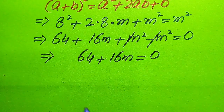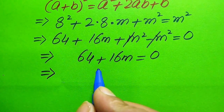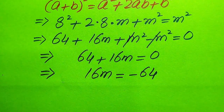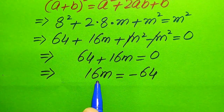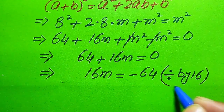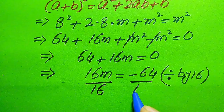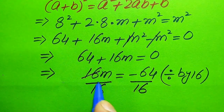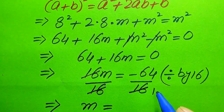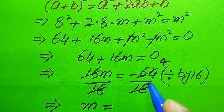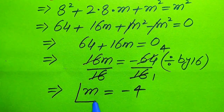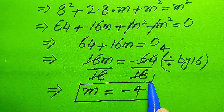To find the value of m, we move 64 to the right-hand side: 16m equals minus 64. Then we divide both sides by 16. The 16 cancels out on the left, and 64 divided by 16 is 4, so we get m equals minus 4. This is the only value of m obtained in this method.